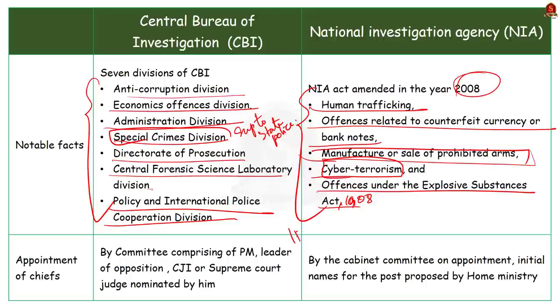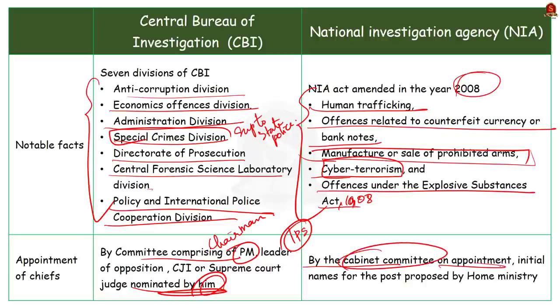So how are they appointed? The appointment of CBI chief is done by a three member committee which includes prime minister as chairman, the leader of opposition, and chief justice of India or any other judge nominated by him. Then the appointment of NIA chief, it is done by the appointments committee of cabinet. Initially the name for the chief post is proposed by the home ministry under which NIA works.